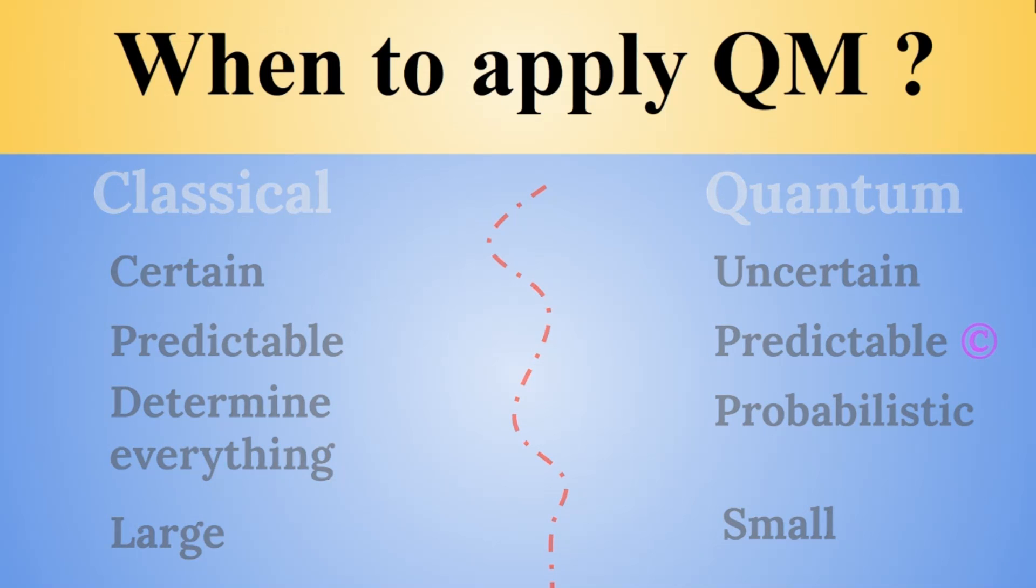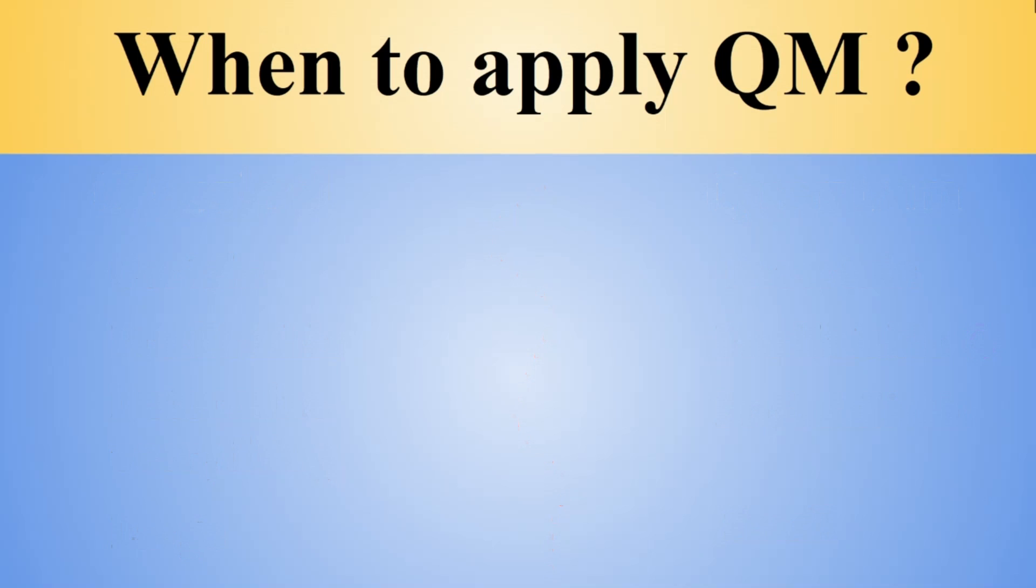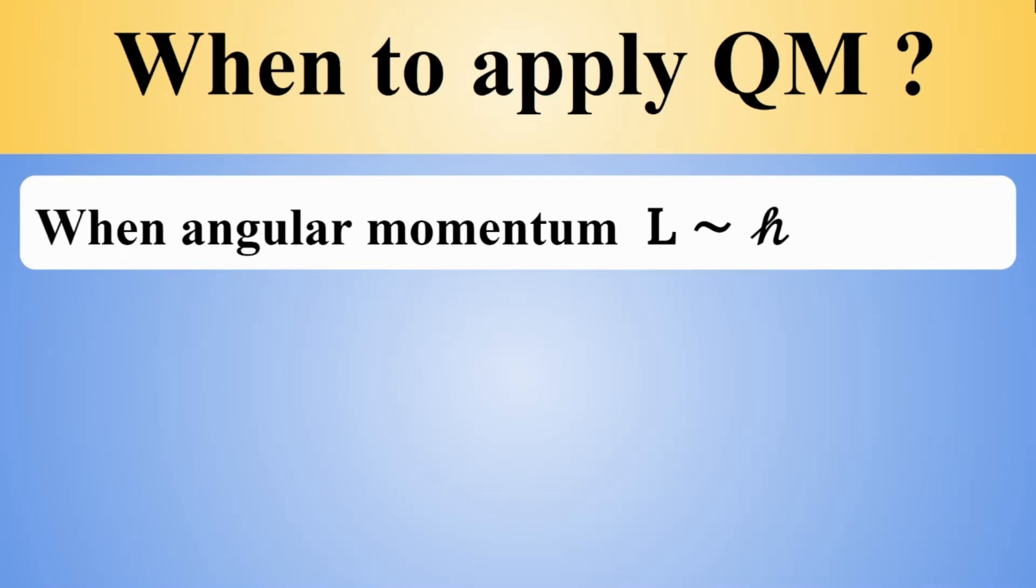Now, doing things more mathematically, quantum physics applies, for instance, when angular momentum L is on the scale of Planck's constant or the reduced Planck constant h-bar. Now, h-bar is the fundamental scale of quantum physics and it appears not only in the context of angular momentum. Planck's constant has units of angular momentum. So, if your angular momentum is of order of Planck's constant, that is O of h-bar or smaller, then you are in the domain of quantum physics.